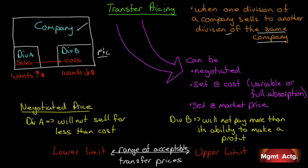Whether variable or full absorption costing is used depends on company policy. The major drawback of cost-based pricing is that Division A will never show a profit, so management must measure it on something other than profitability. Division B, getting it at cost, never relies on any market price signals. Also, if Division A transfers everything at cost, there is little motivation to control costs because the profit incentive isn't there. Even so, quite a few companies simply set it at cost — no need to negotiate, it's just whatever it costs.